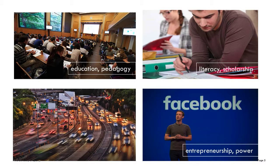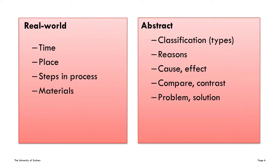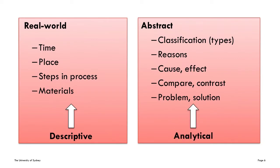Roads, bridges and traffic signs can be analyzed into more abstract terms such as transport infrastructure. Categories of real-world schemas include time, place, or steps in an established process and so on. In contrast, categories of abstract schemas commonly found in academic writing include classification, reasons, cause and effect, and so on. Descriptive writing is based on real-world schemas, while analytical writing is based on abstract schemas.